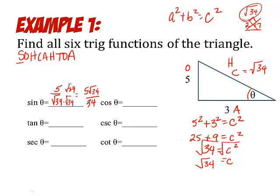Cosine, adjacent over hypotenuse. Adjacent side is 3, hypotenuse is square root of 34. Take a moment to rationalize it, and you're done. Tangent, opposite over adjacent, so it's 5 over 3. No rationalizing needed there.